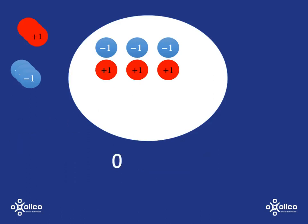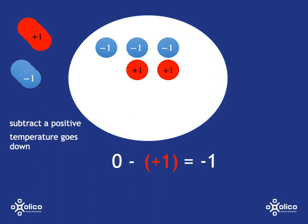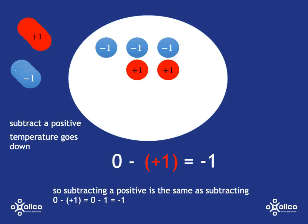Now in this situation we're back at zero. What we're going to do is take out one of those positives — one of those hot disks. So we're subtracting a positive. If we take something hot out of our pot, will the temperature go up or down? If you've removed some heat, obviously the temperature is going to go down. So from zero, we go down to minus one. Subtracting a positive is just the same as subtracting, going down.